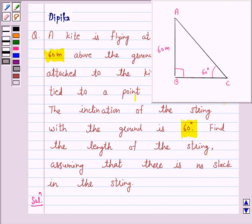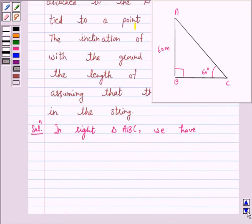So in right triangle ABC we have AB is equal to 60 meters, and angle ACB is equal to 60 degrees. We want to find AC.